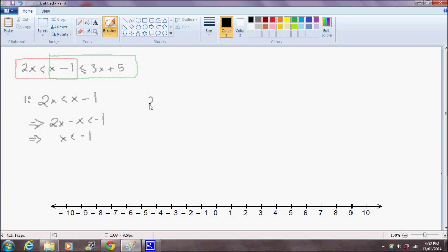And now, the solution for the second part is x minus 1 is less than or equal to 3x plus 5. Again, I'm going to treat this as any other normal equation and get all the x's on the left-hand side and all the numbers on the right-hand side. So I'm going to take away 3x from both sides. So x minus 3x minus 1 is less than or equal to 5.